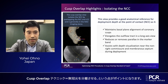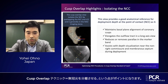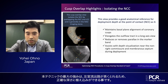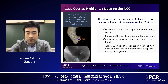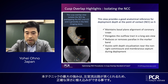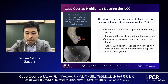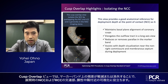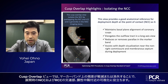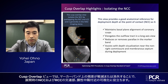What is the highlight of the cusp overlap technique? To rephrase in one word: isolate the non-coronary cusp. The biggest advantage of this technique is that it can elongate the left ventricular outflow tract so we can accurately implant the depth. It reduces or removes parallax in the marker band in this cusp overlap view, and it can assist with depth visualization near the non-right commissure and membranous septum during deployment.